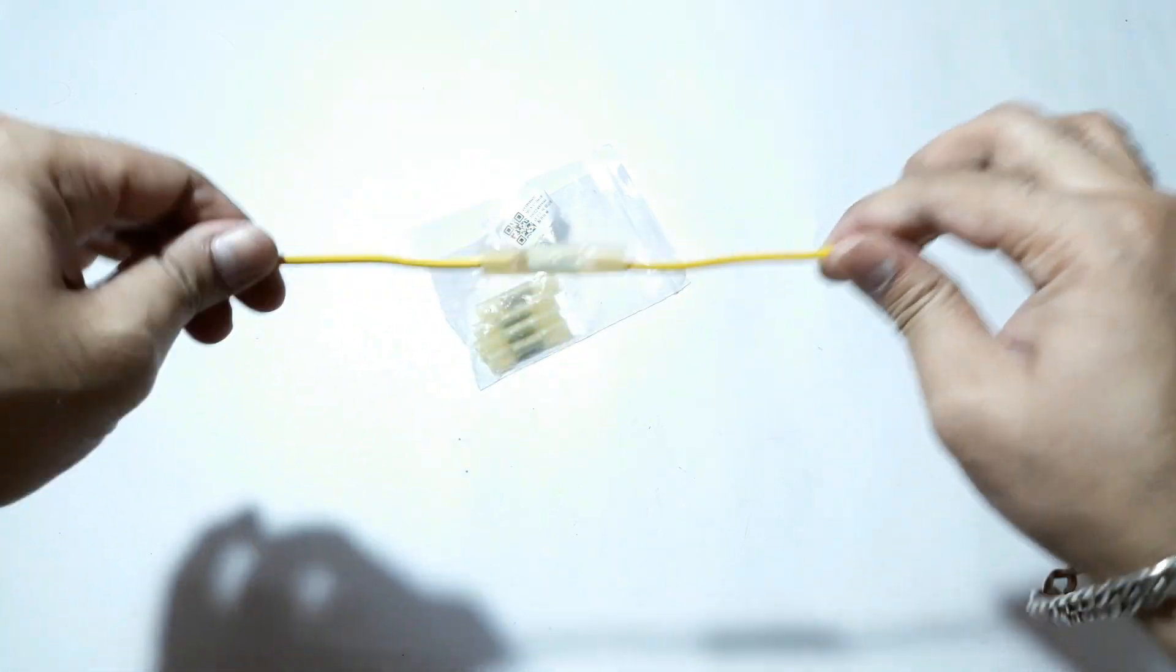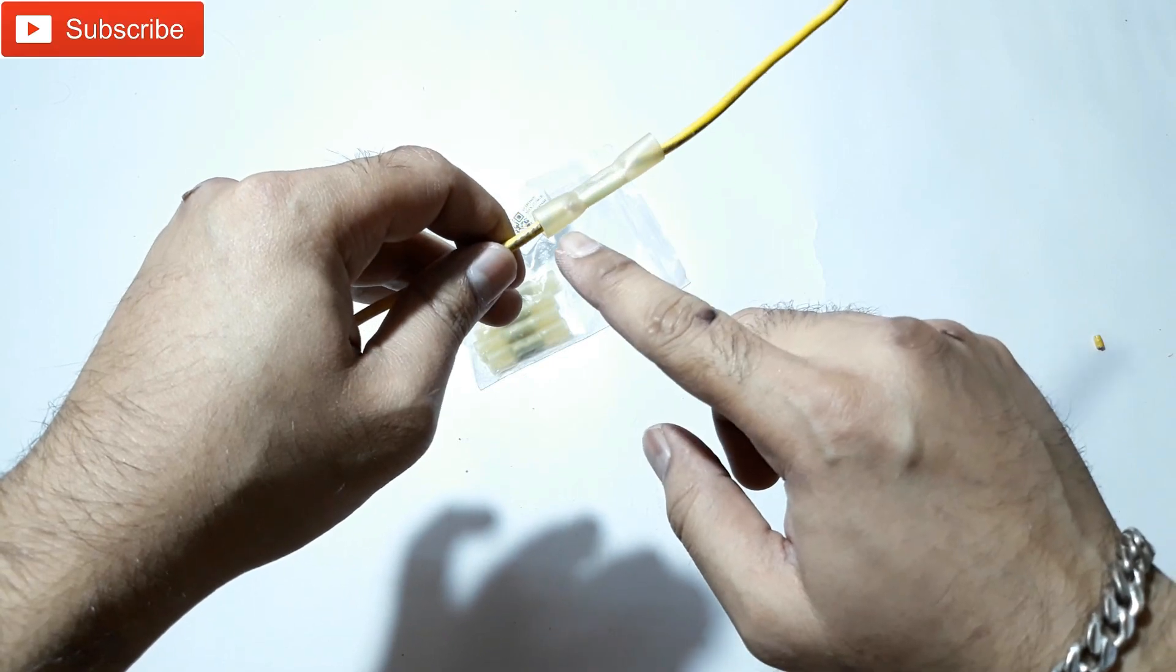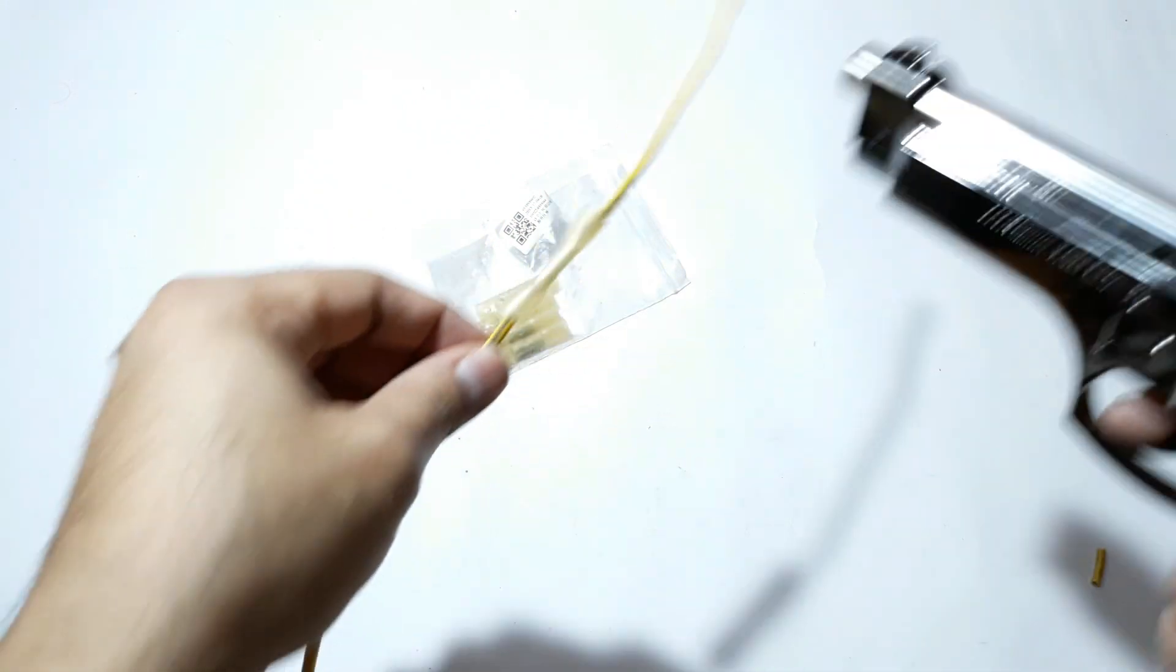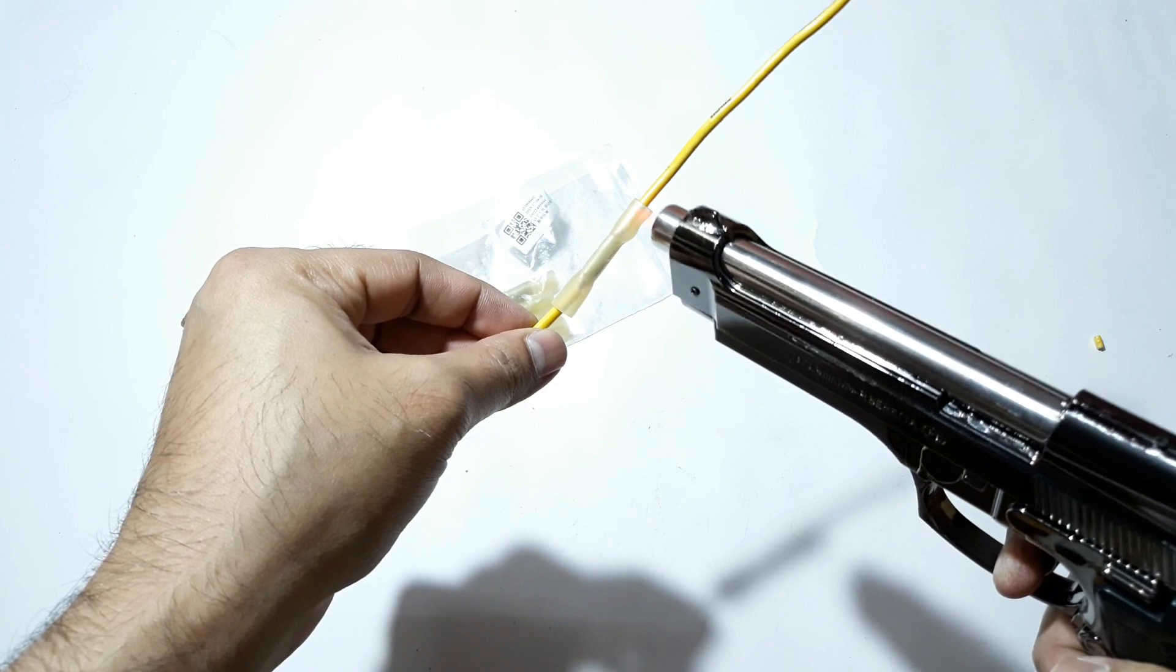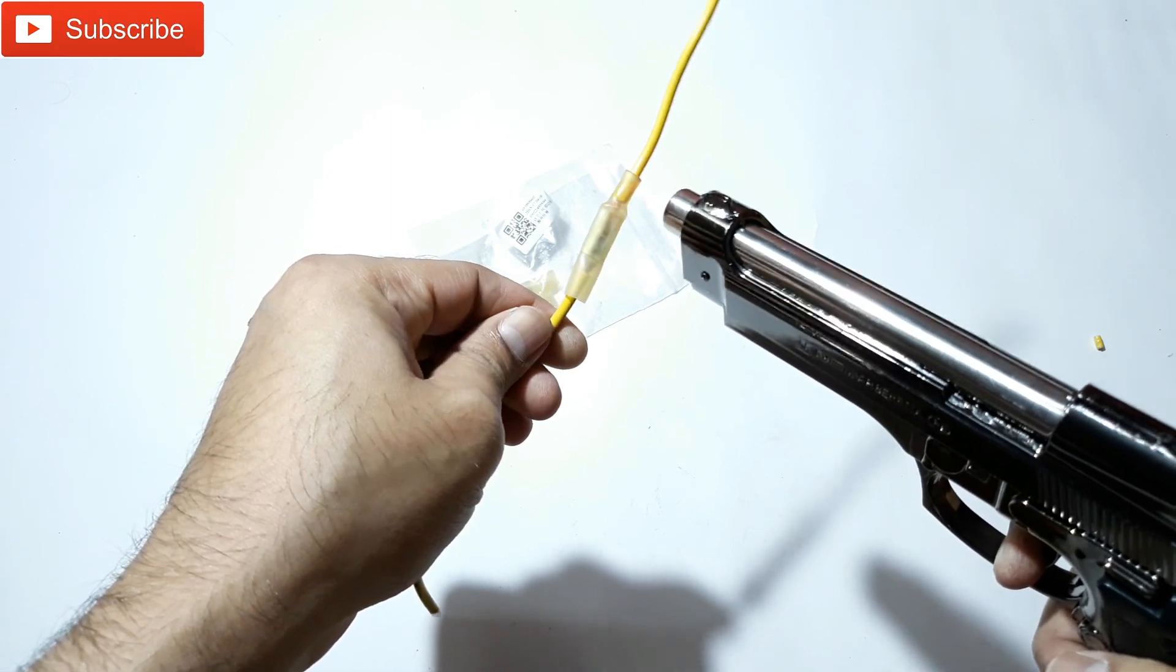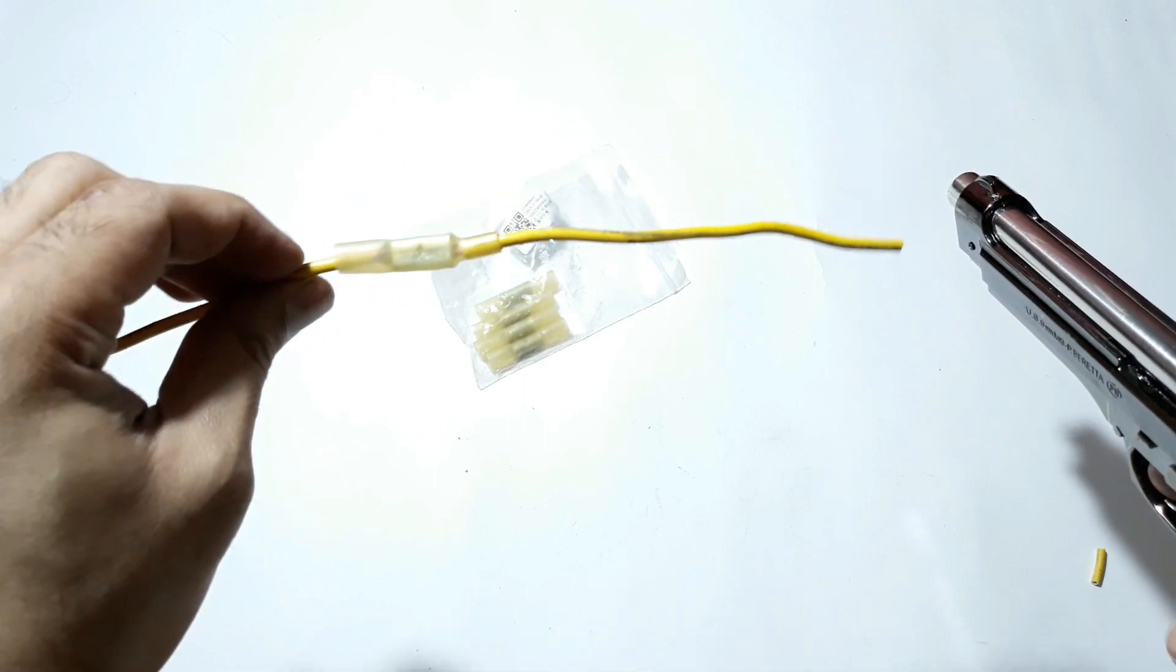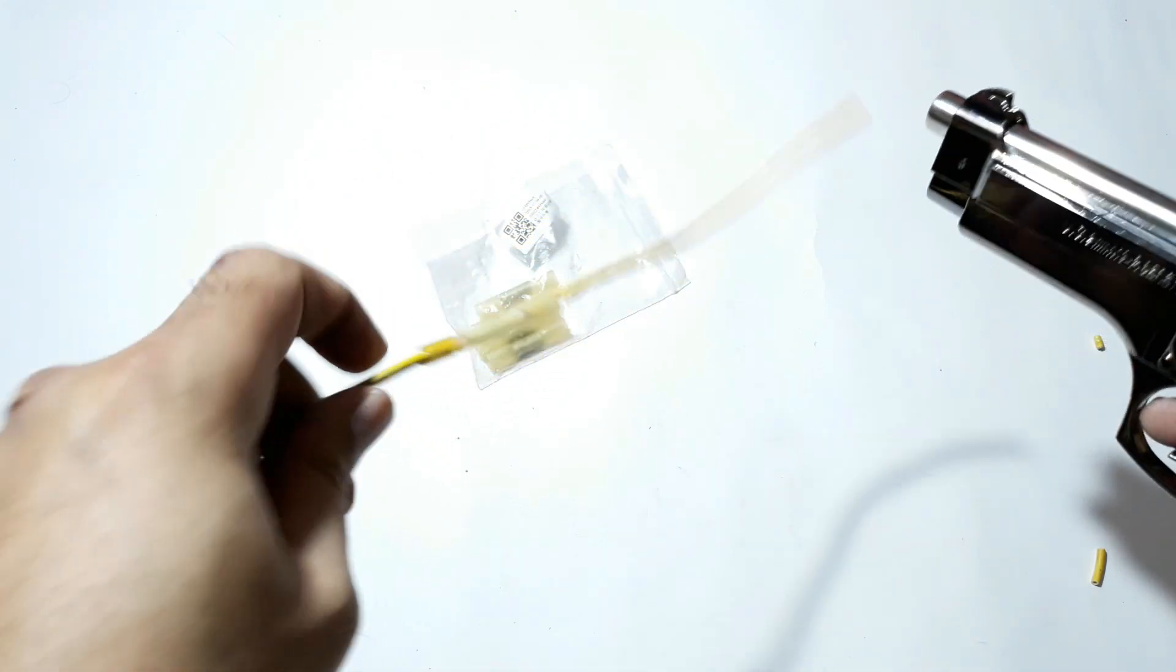You can see it's properly connected. Now what you're going to do is melt this heat shrink tube, and this will stick to the wire properly just like this. Nice, same on the other side.